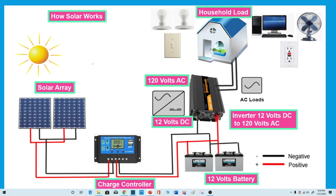A solar panel works by absorbing sunlight through a solar cell and turning it into electricity. The direct current then travels from the panel through an inverter, which converts the energy into usable electricity. As it reaches the panel board of your home via wires and conduit, it's almost like having your own personal power plant on the roof of your home with an endless supply of clean energy.